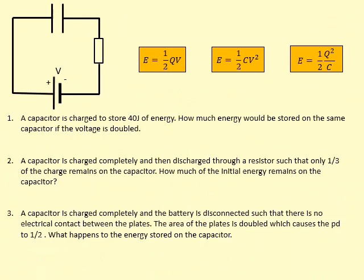Here are all the equations for the energy stored in a capacitor — you need to choose the correct one. A capacitor is charged to 40 joules. How much energy is stored if the voltage is doubled on the same capacitor? The capacitance is constant, so use E = ½CV². Energy is directly proportional to V², so doubling the voltage gives 4 times the energy: 160 joules.